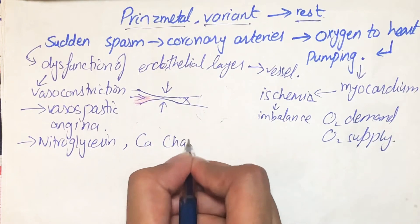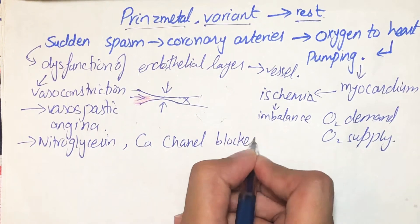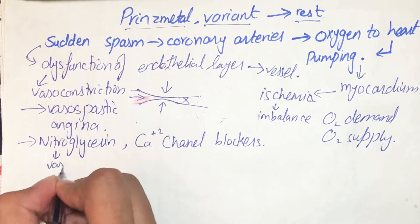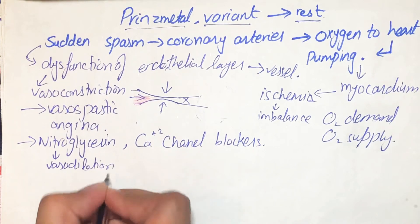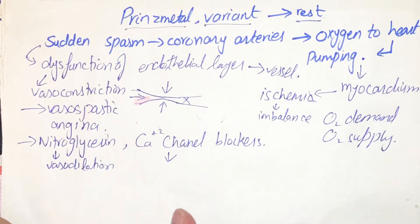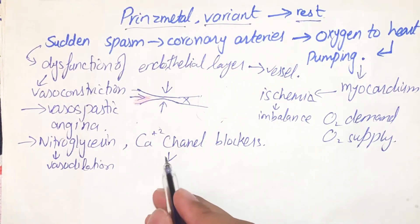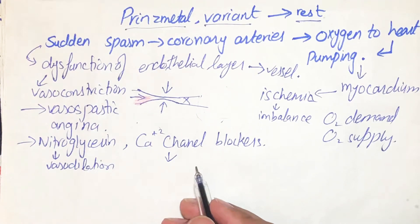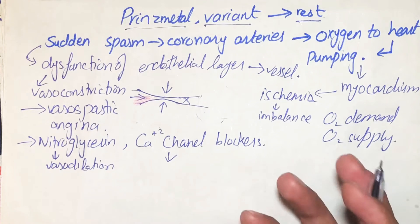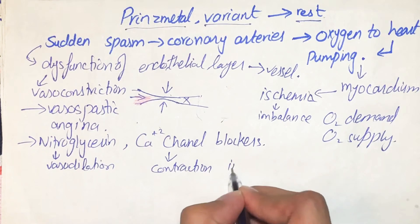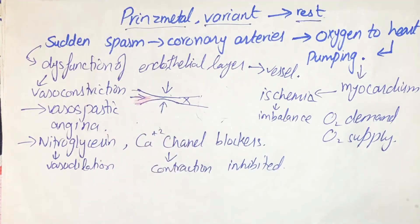Prinzmetal angina can be treated with nitroglycerin or calcium channel blockers. Nitroglycerin is a vasodilator and is also effective in stable angina. Calcium is an important element for muscle contraction — we have smooth muscles in our vessels — so when calcium channels are blocked, there is no calcium available in the muscles, meaning no constriction mechanism occurs in that part of the vessel. This is how the spasm is relieved through these two drugs.